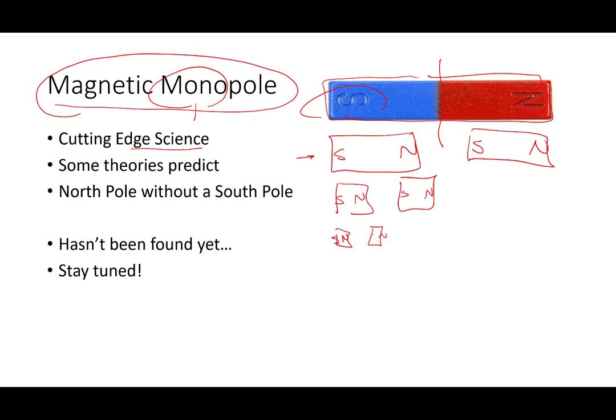Scientists for a long time have been saying, is it possible to keep cutting these pieces smaller and smaller and smaller and end up with just a south and just a north? Can you separate one from another? And if we could, that would be referred to as a monopole or a single north or south pole. People have been working on it for a long time. As of right now, it has not yet been found.